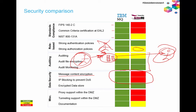There are also a few other advanced security features in MQ: IP blocking to prevent denial-of-service attacks, proxy support in DMZ, and some tunneling support — advanced security concepts compared to what you don't get in ActiveMQ.